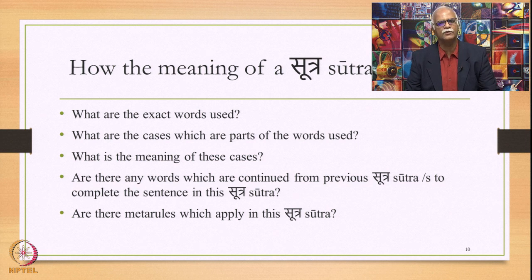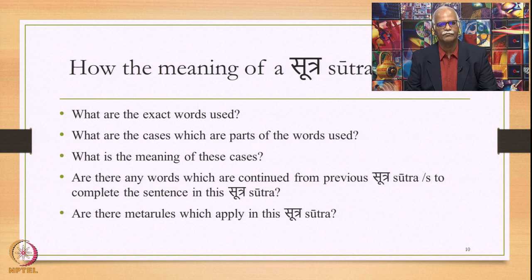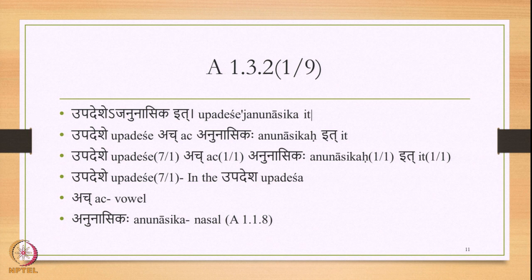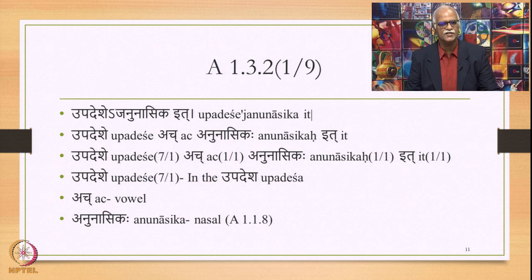The answers to all these questions together give us the methodology to make the meaning of one particular sutra. We shall see how this happens when we study the small section of 'it-sanjnya' — the term 'it' which we used earlier in forming the Pratyahara. There, in brief, we used 1.3.3, which said that the final consonant is termed as ith in all the 14 sutras. Let us now study this in detail. Let us take the first sutra in this section: 1.3.2.